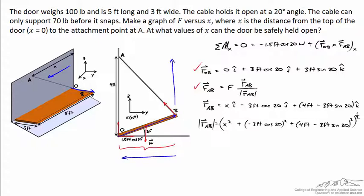It acts in the negative j hat direction by a value of negative 3 feet cosine 20. And in the k hat direction it goes upwards the distance of 4 feet minus the 3 feet sine 20, or this length right here. The magnitude of RAB is simply the square root of the sum of squares of each of these three components.